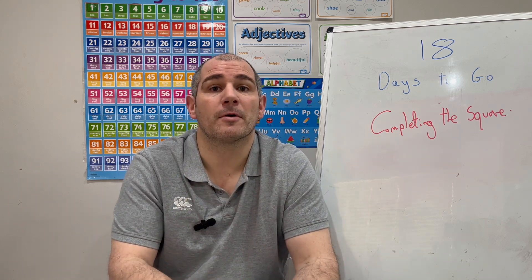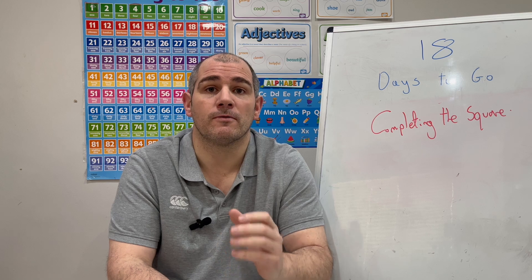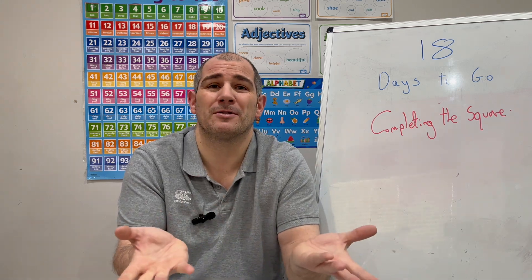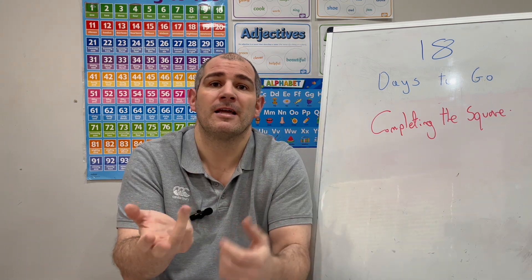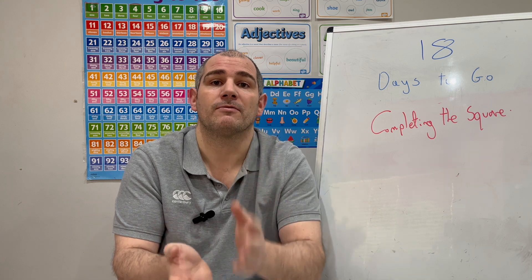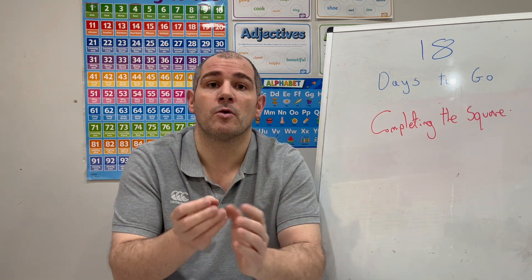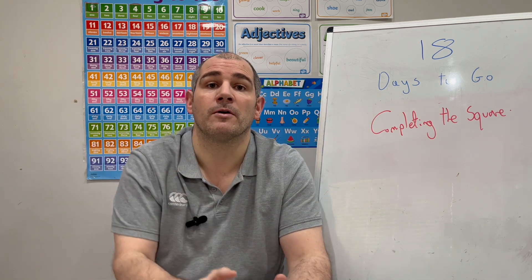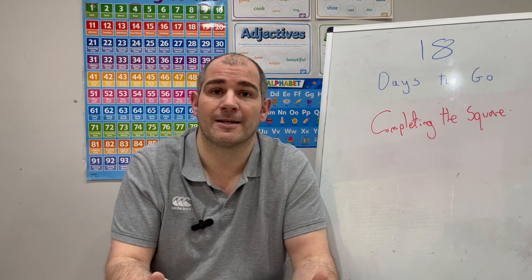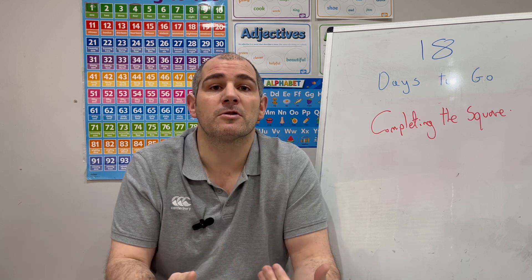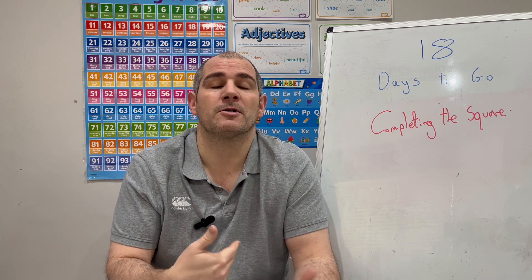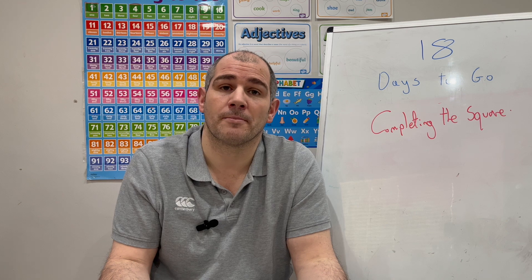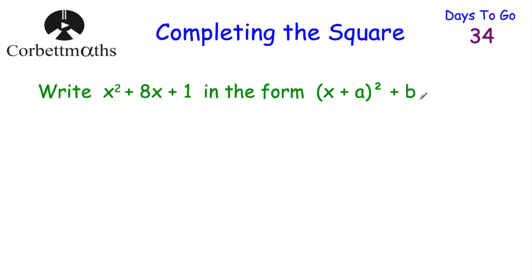We've also looked at how to use the quadratic formula to solve quadratics. Today we're going to look at how to write quadratics in a different form using completing the square, and how that form can be really useful for solving quadratics and for finding the equation of the line of symmetry or the coordinates of the minimum or maximum point.